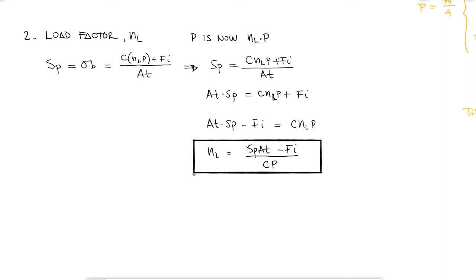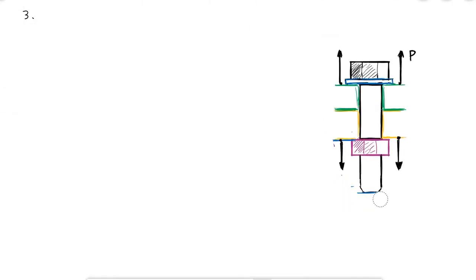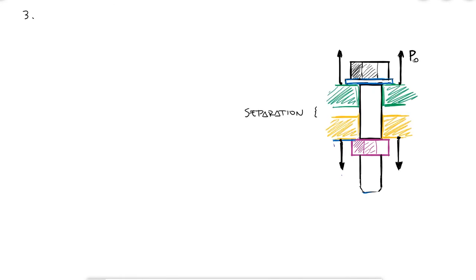Finally, the third indicator is specific to the case where the external load would cause the joint to separate. We'll call this the external load P0. If separation does occur, then all of the external load P0 goes into the bolt, which means that Fm, the member tension, is 0.